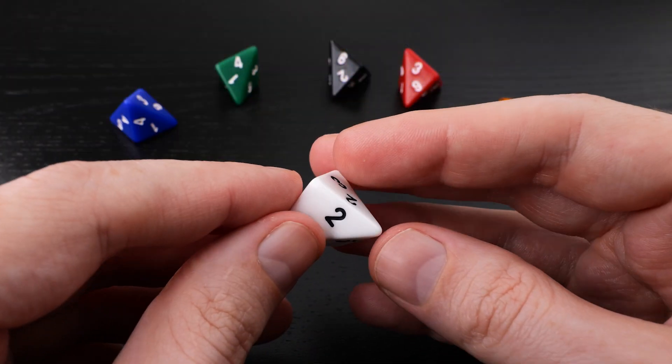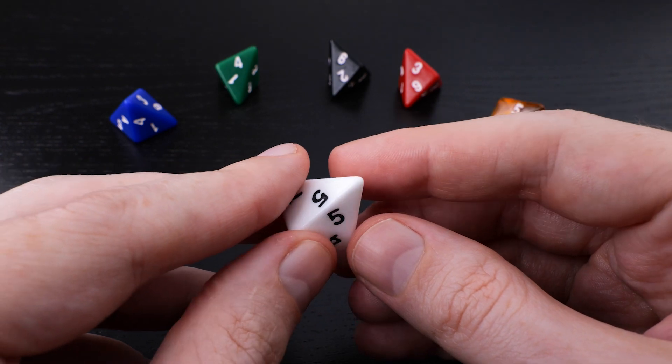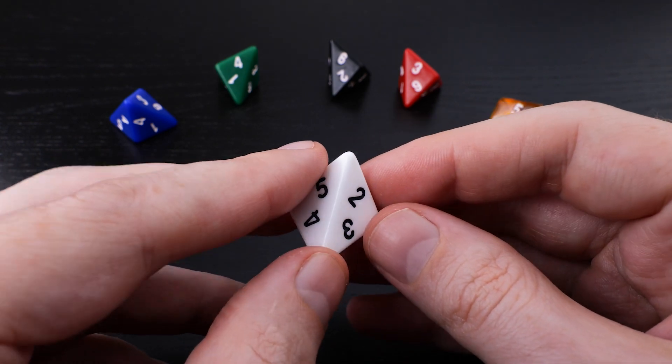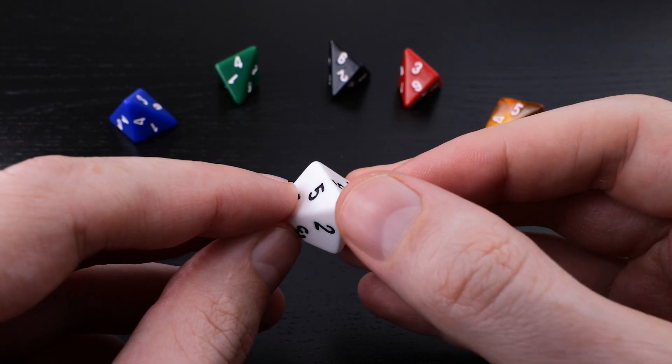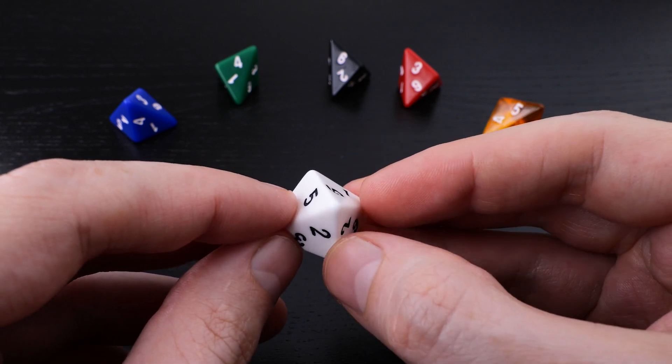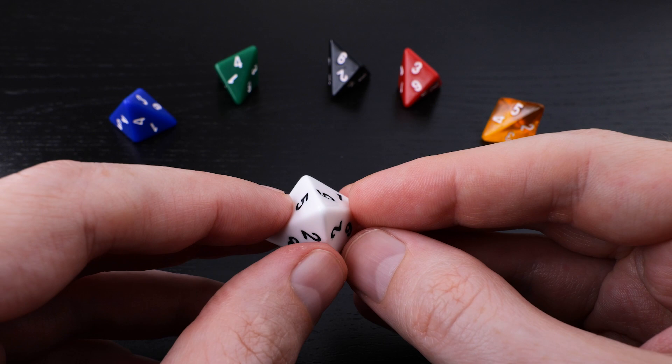Since there aren't any opposite faces we don't have to worry about them adding up to 7, but there's something roughly equivalent. Each of the vertices on the equator has two numbered edges coming into it, and we can ask that those two numbers add to 7.